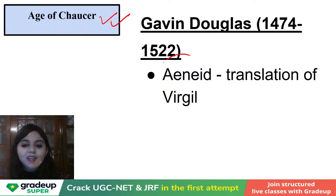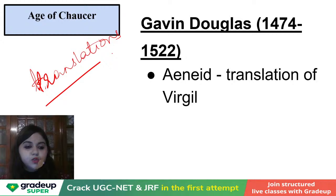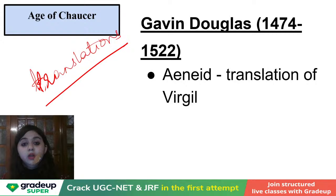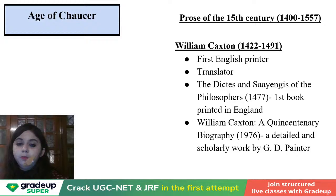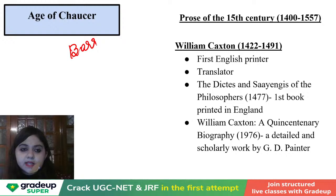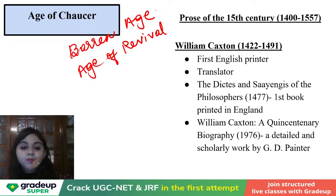We also have Gavin Douglas who is translating Virgil's Aeneid, so translations are also becoming important during the period. Do make it a point to remember that this is a barren age because creativity is not encouraged — creativity can't be encouraged because the war has made the situation so volatile that they don't have a fixed monarch who can be their patron. This period is also famously called the Barren Age, and in multiple books you will see this as the Age of Revival.